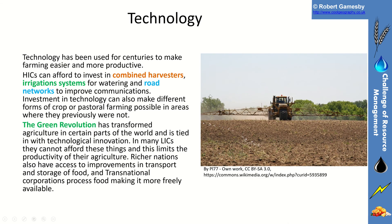Technology is another massively important factor — you can see a crop sprayer there. We've used technology for centuries to make farming easier and more productive. High income countries can afford to invest in combined harvesters, irrigation systems for watering, and road networks to improve communications and move products. An investment in technology can make different forms of crop or pastoral farming possible, such as using greenhouses where they previously were not. That technology has been spread to poorer parts of the world through the Green Revolution, and richer nations have tried to continue that — we're going to look at the new Green Revolution a little bit later on.